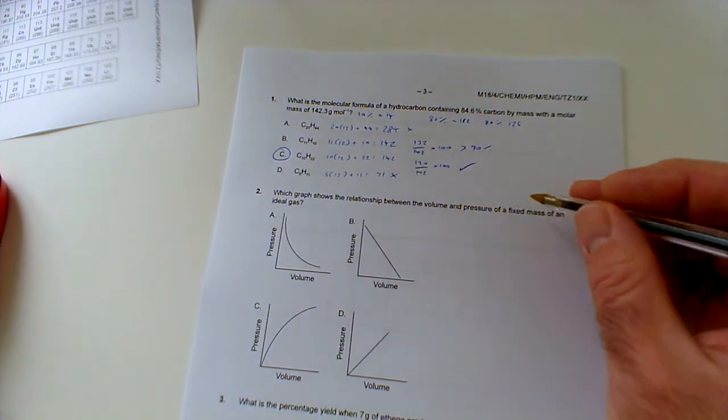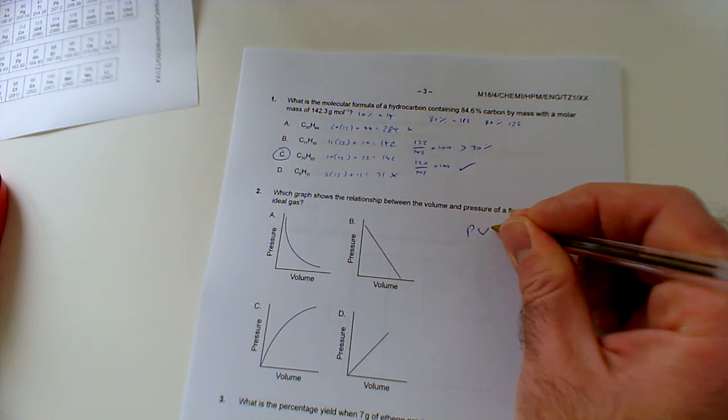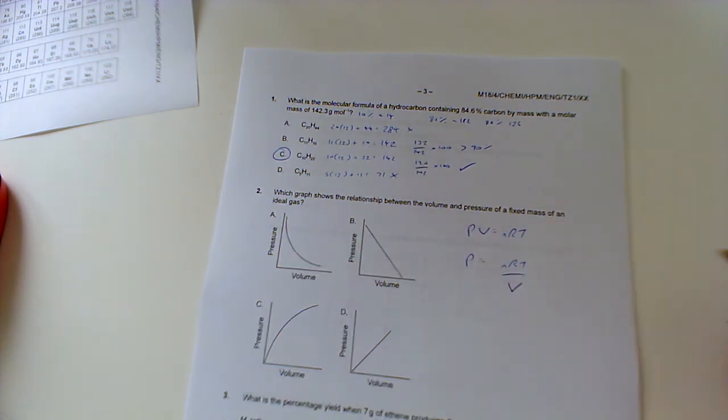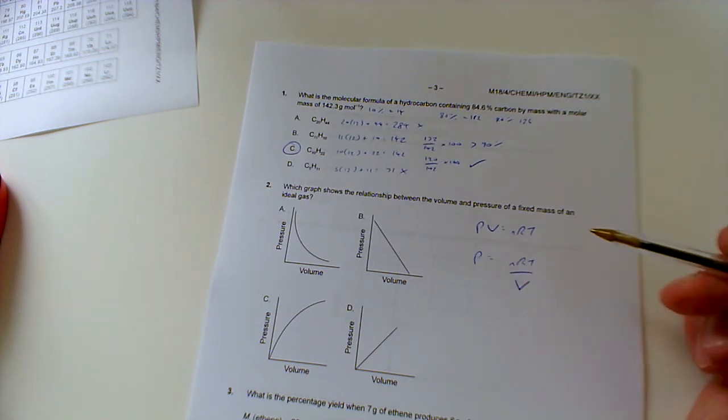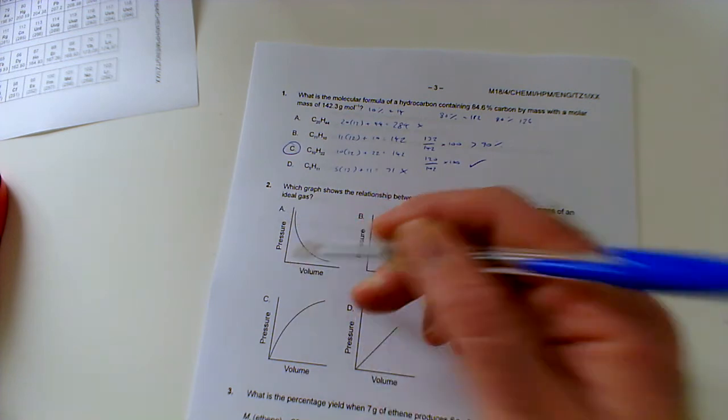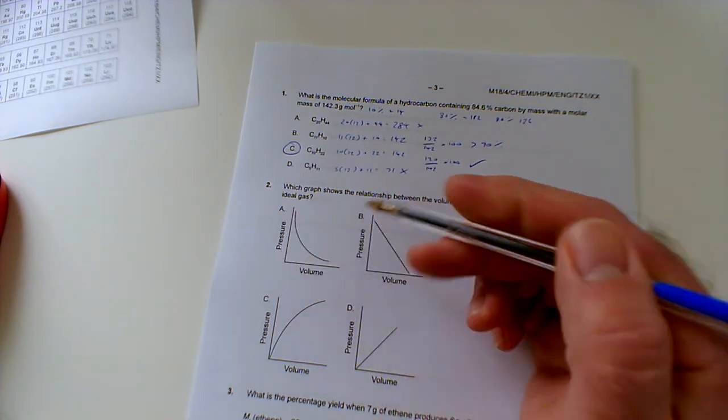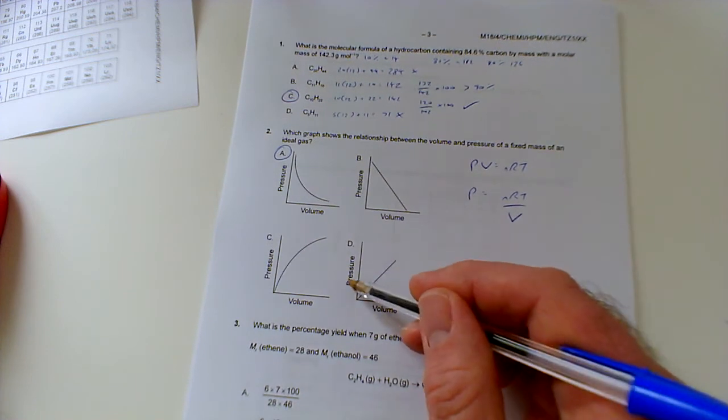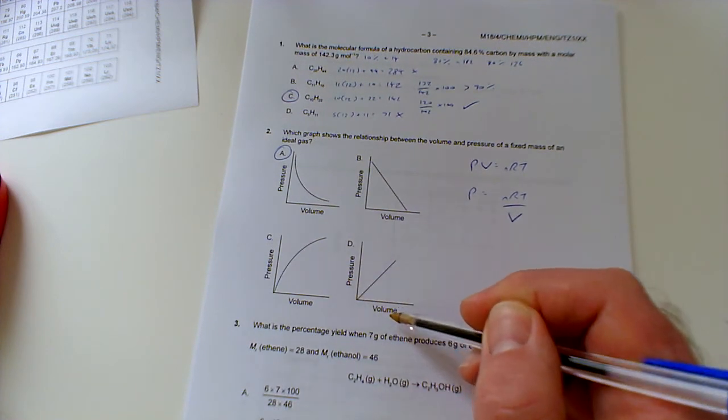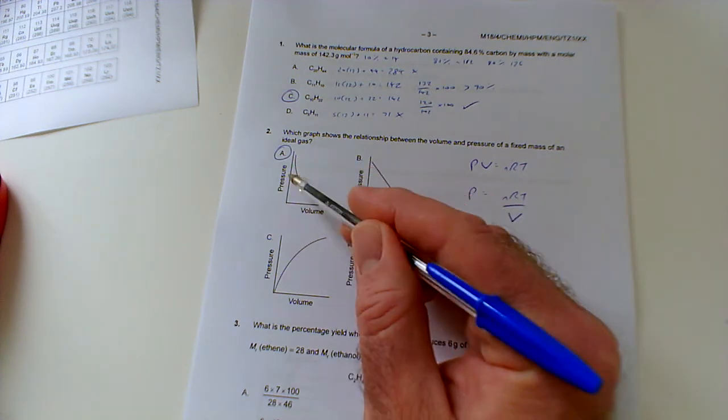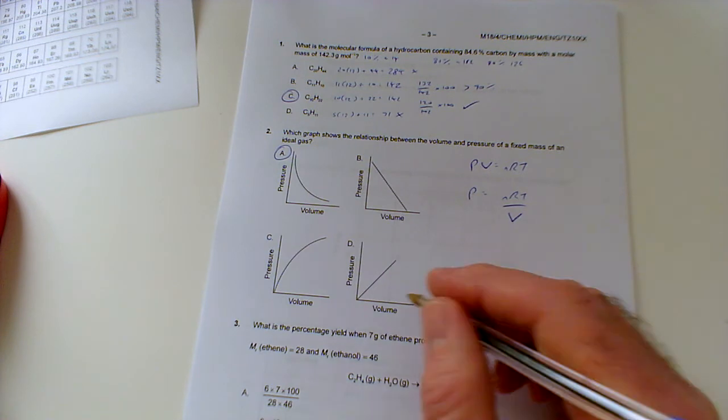Number two: which graph shows the relationship between the volume and pressure of a fixed mass of an ideal gas? Well, PV equals NRT, so P equals NRT over V. So P is inversely proportional to V. When it's inversely proportional, we need a nice curve showing that as volume increases, pressure decreases, or vice versa—as pressure increases, volume decreases. So we want to go with this one here. That one—you don't get a straight line with inversely proportional, you always get a curve. This one, if it had been one over pressure or one over volume, then that would be the correct graph, because a good way to show something is inversely proportional is to plot the reciprocal of one of the values, and then you get a directly proportional relationship as shown here.